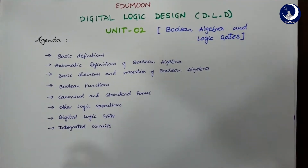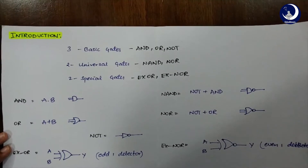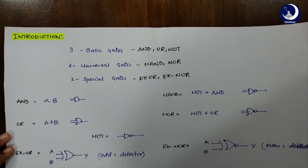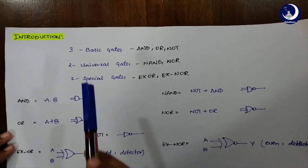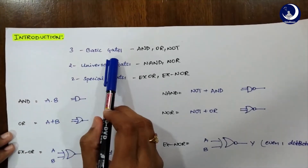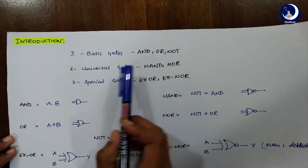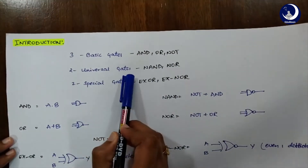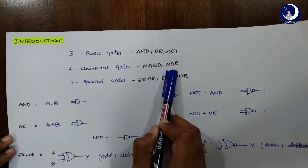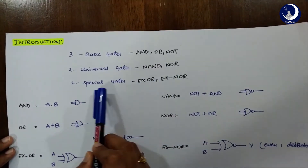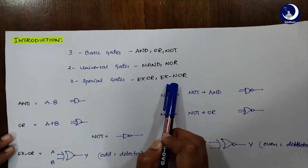I'm Sohana Dhammutotti and now let's get started. First, let me introduce you to a few gates. We have 3 basic gates which are AND, OR, and NOT. We have 2 universal gates which are NAND and NOR, and 2 special gates which are XOR and XNOR.